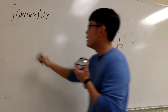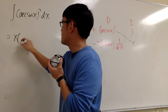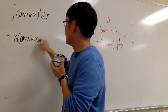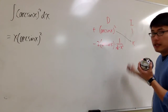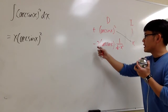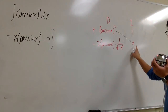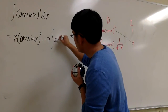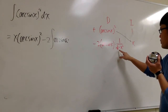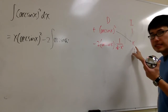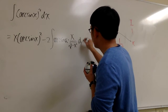So here I get x times arcsin x squared from the diagonal. Then each row's product is still an integral, so we have minus 2 times the integral of the product of the remaining row. That gives us arcsin x times x over square root of 1 minus x squared, dx.